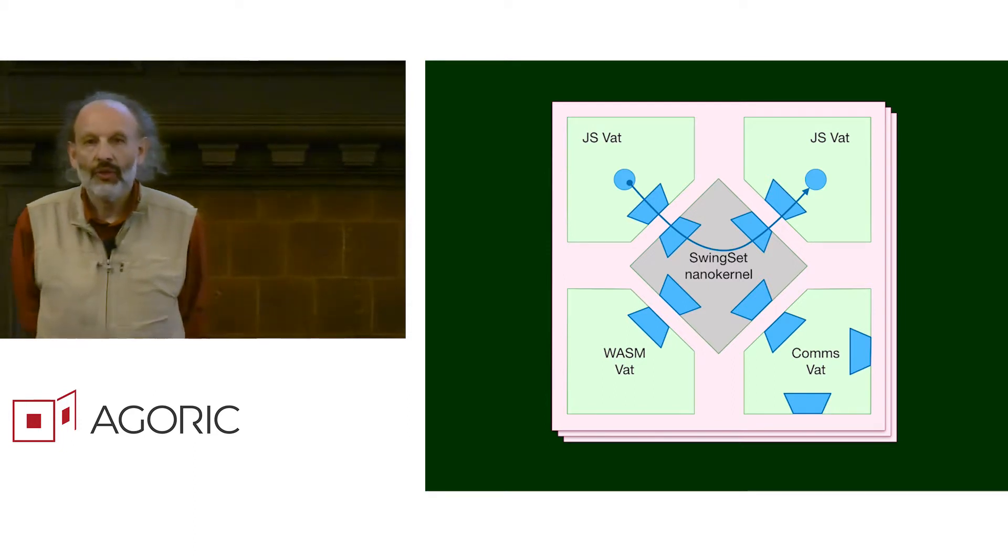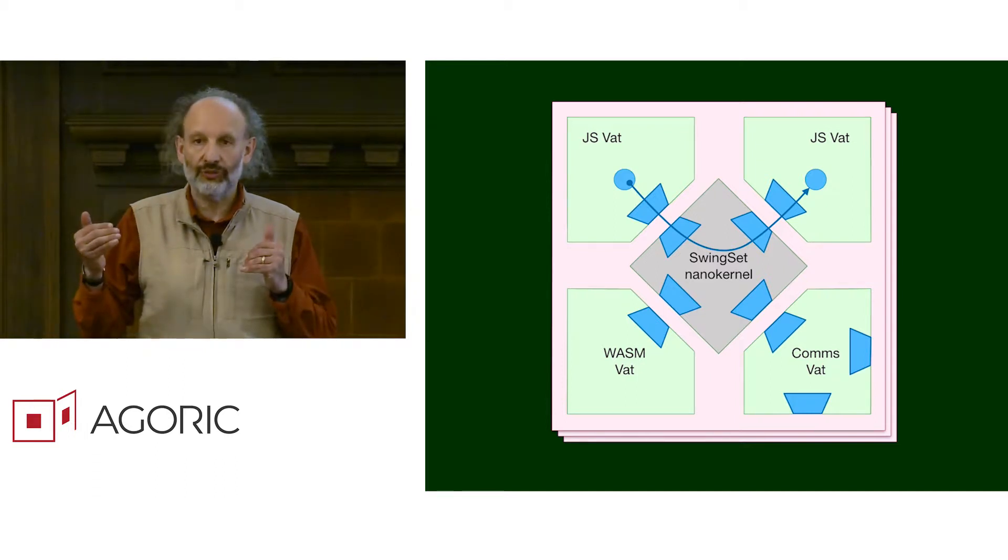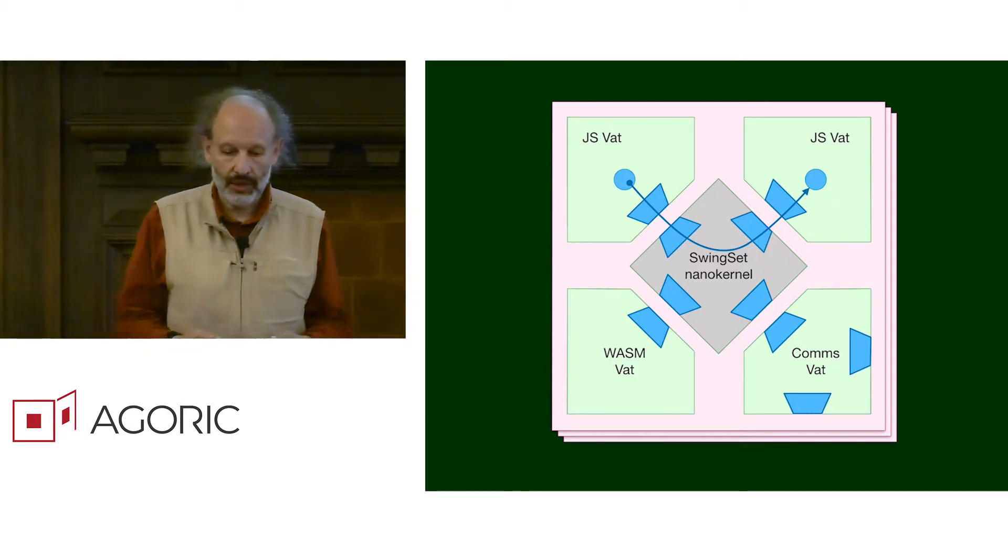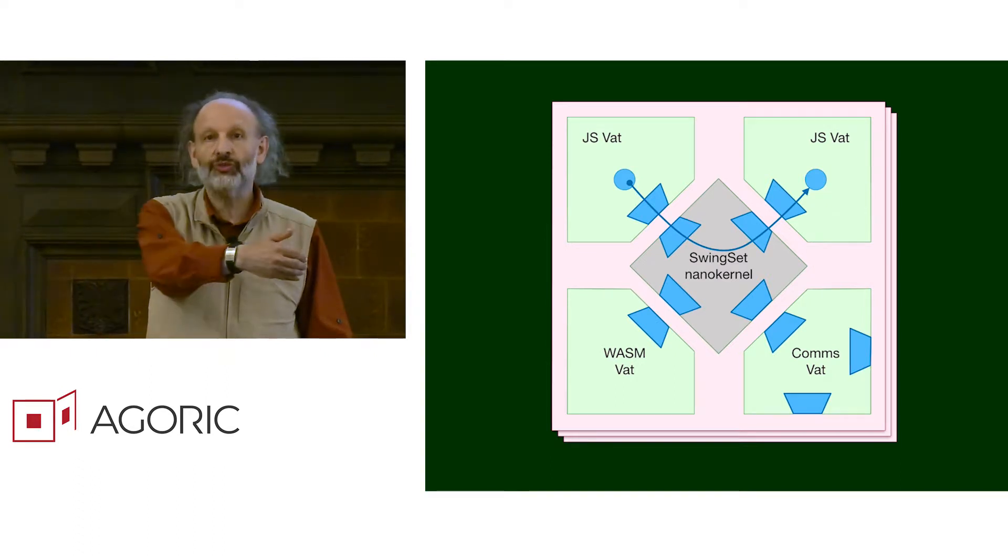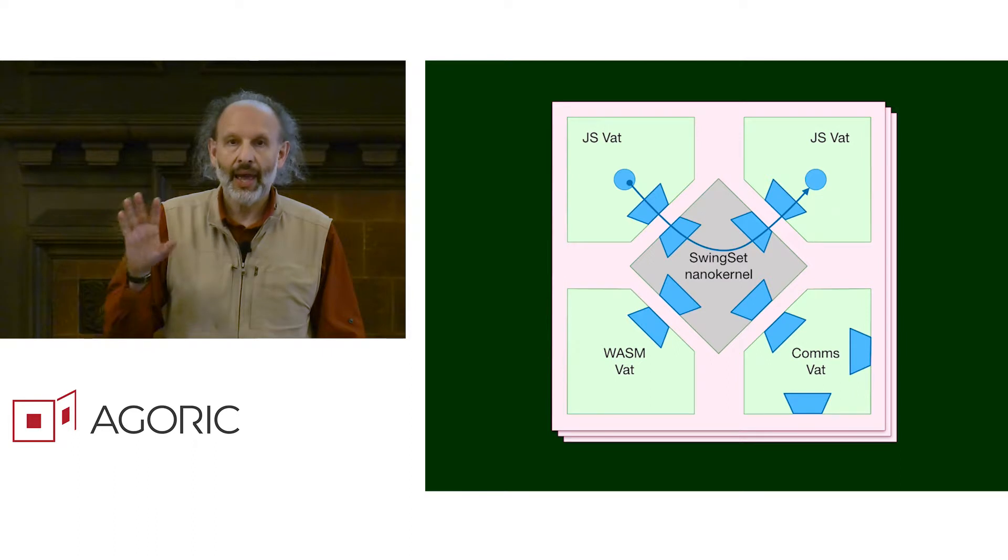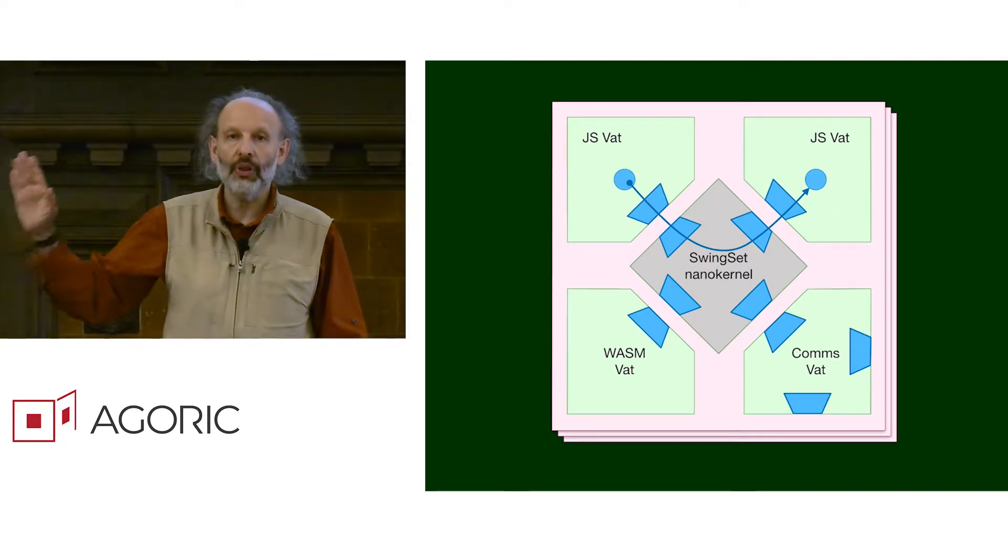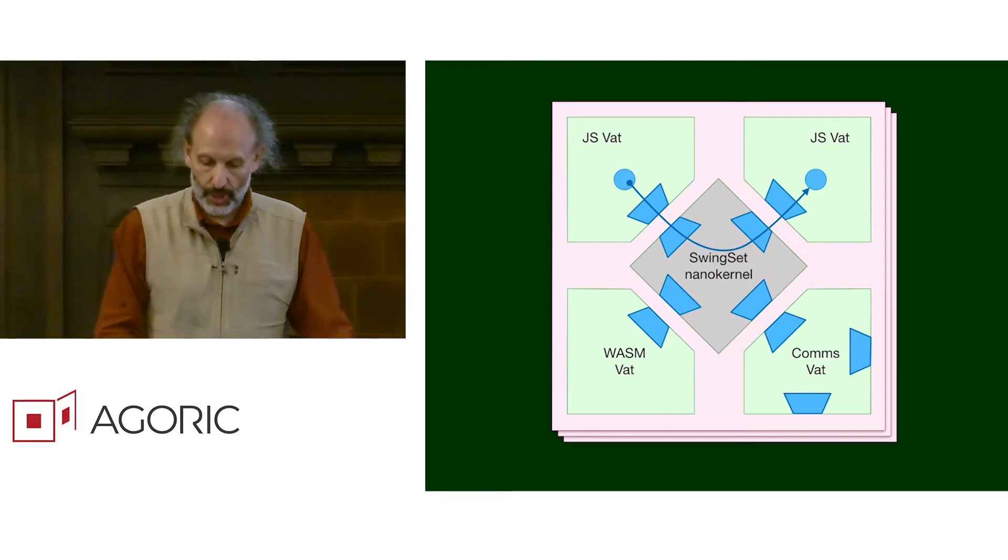Just as the nano kernel sitting between a bunch of VATs has to have separate C-lists facing each VAT, the comms VAT has to have one such table facing its kernel in order to get to the other VATs within its swing set, and then it has another table for each other platform that it's securely communicating with.